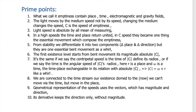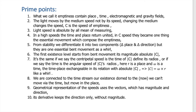Seventh principle: it is the same whether we say the centripetal speed is the time of c defining its radius r, or if we say the time is the angular speed of c's radius — here r is a place and ω is a time. The time-place exists changeable in its relation with absolute c. So absolute speed c equals ω multiplied by r. Like a world, we are connected to the time stream; our existence is tied to the now — we cannot move via time but we can move in place.